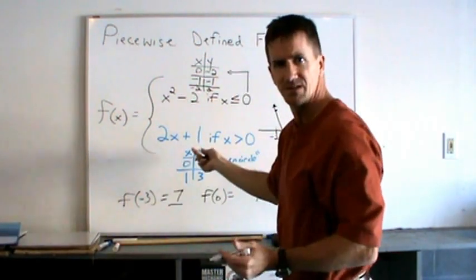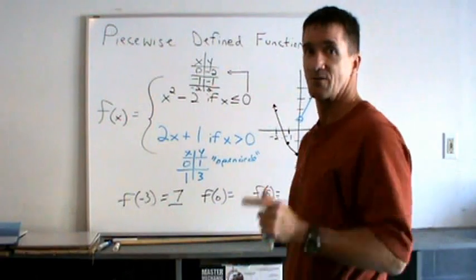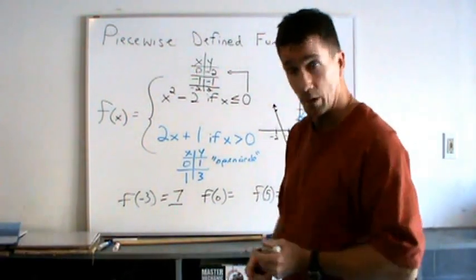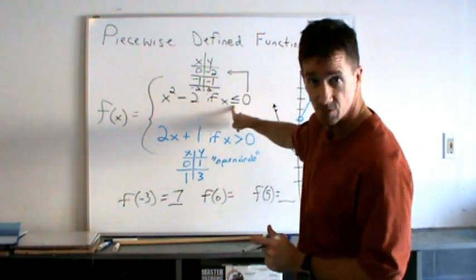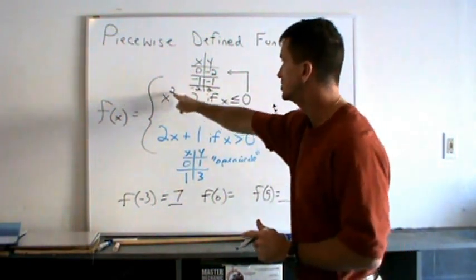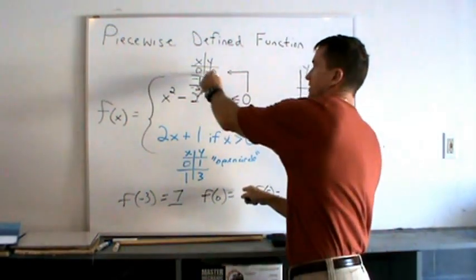You don't substitute into both pieces. It's a function, right? For every x, there can be only one y. At f equal to 0, we substitute which piece? Oh, this has an equal sign, so we'll substitute 0 in here. 0 squared minus 2 is negative 2. And yes, it's that value right there.